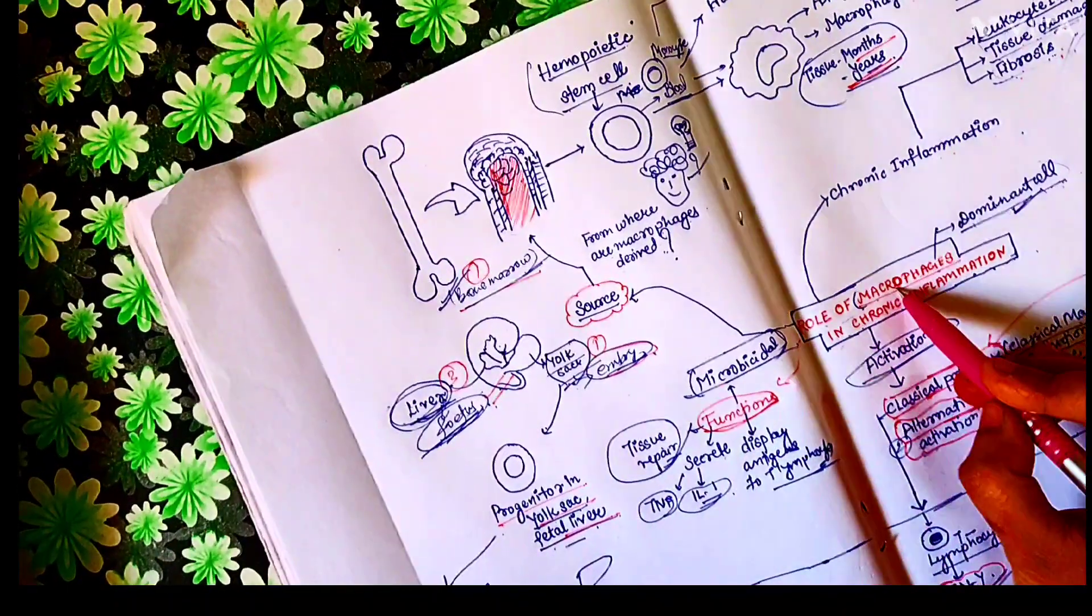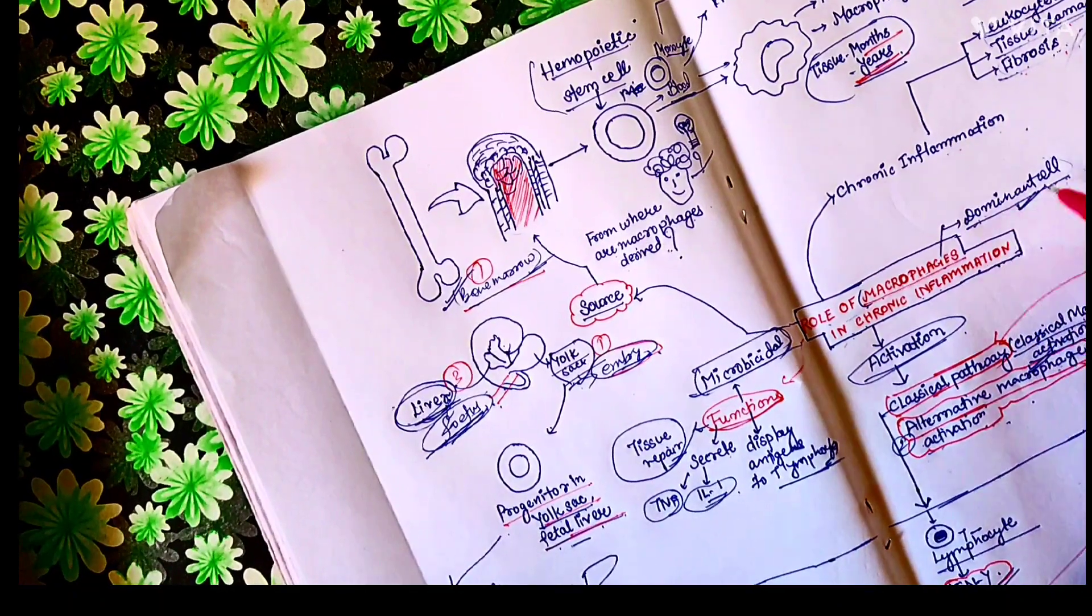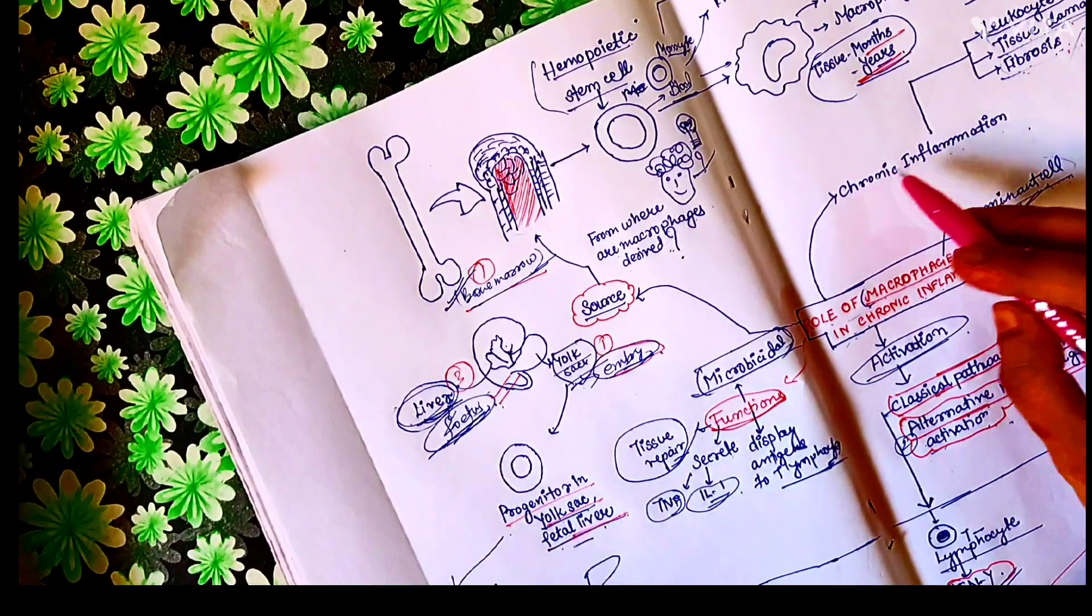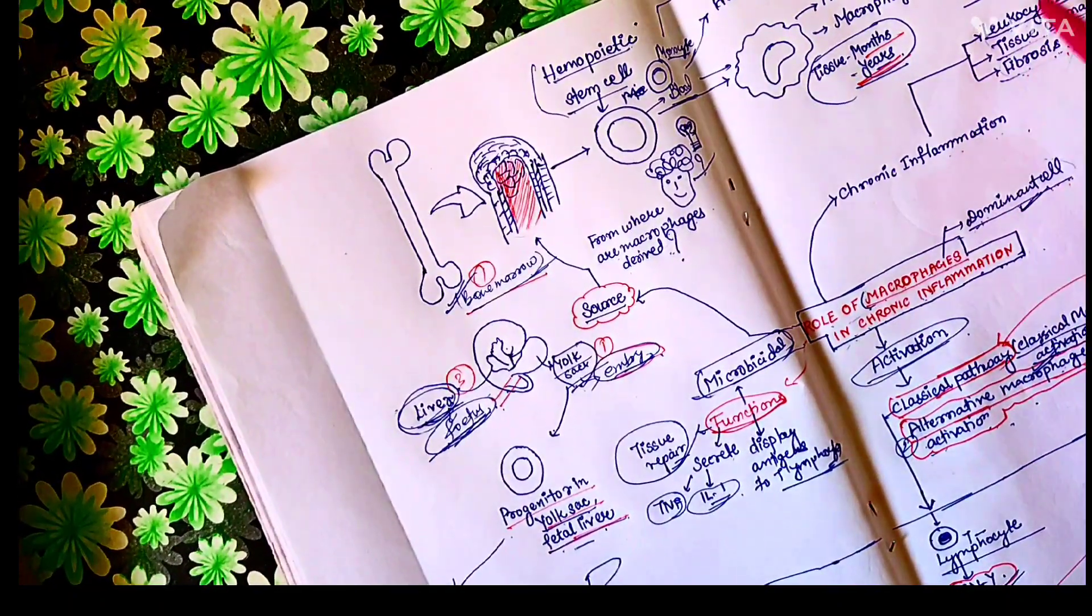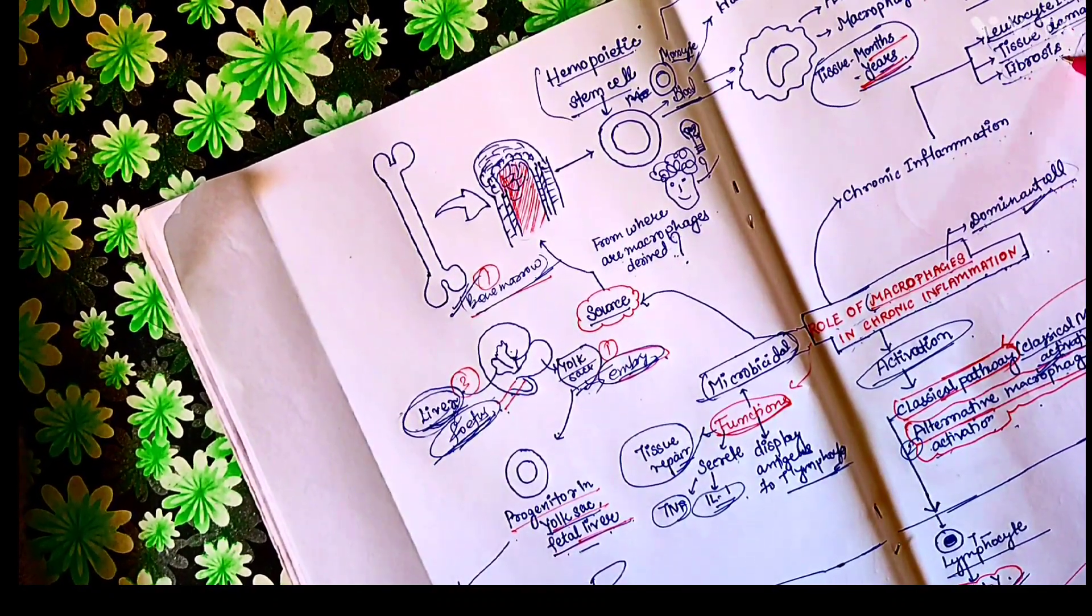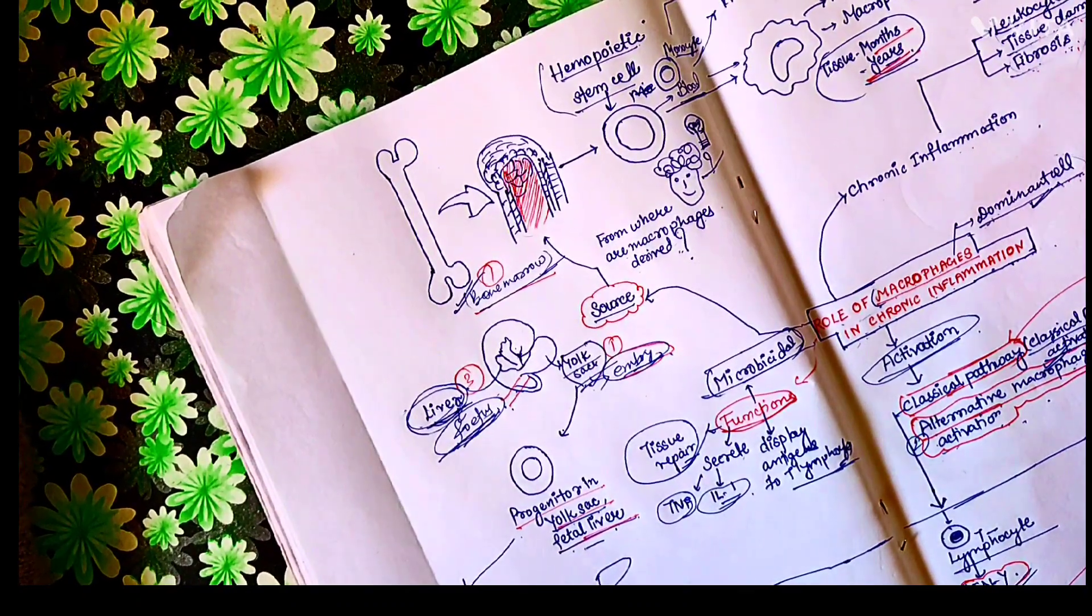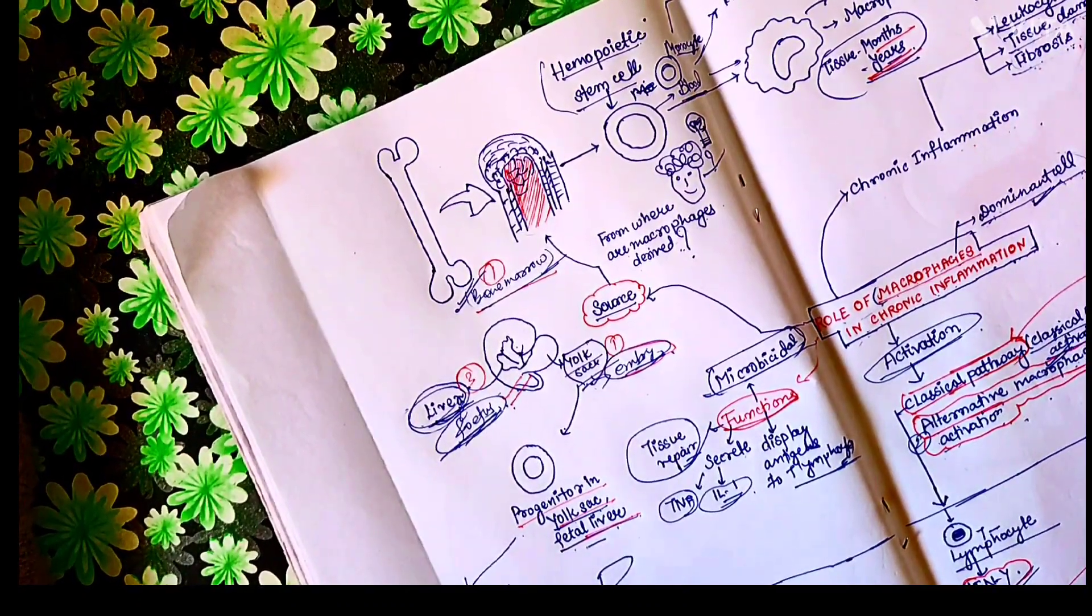Today we will study about the role of macrophages in chronic inflammation. We know that macrophages are the dominant cells of chronic inflammation. Chronic inflammation is characterized by infiltration by leukocytes, damage of tissue and fibrosis. And in all these three processes, macrophages have a role to play. We will discuss in detail about this in today's lecture.